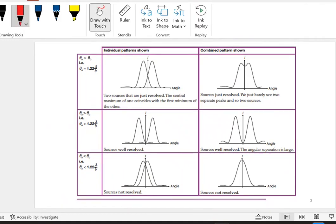Here I have just resolved, just resolved when the central maximum, here, when the central maximum of the first source coincide with the first minimum. So, here is central maximum of one of the source coincide with the first minimum of the other source, they're just resolved. I can barely distinguish that I have two different source of light.